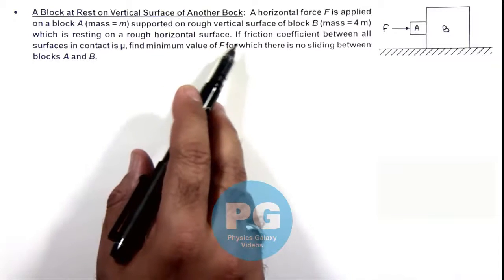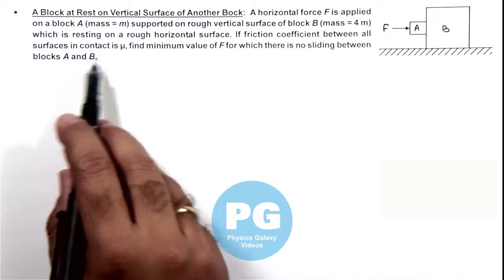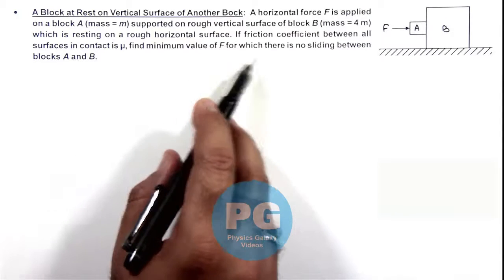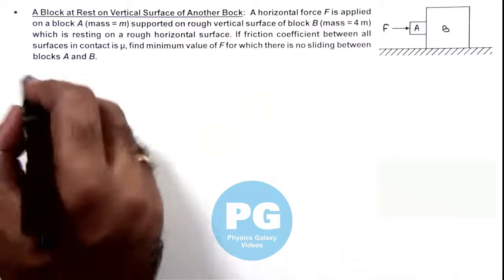Now, it is saying if friction coefficient between all surfaces in contact is μ, we are required to find minimum value of F for which there is no sliding between the blocks A and B.